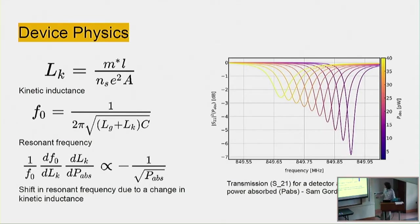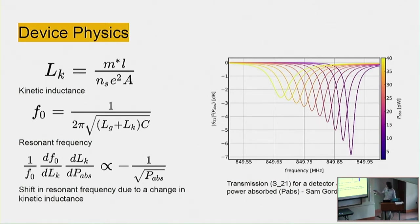All you have to do to read this out and measure the amount of power is place a tone at the resonant frequency. If power is absorbed in the detector and you are measuring the power of this tone at the end of the device, you will get a difference in the amount of power transmitted through the circuit if it shifts. So you just write a tone for every detector and observe the differences in tone powers or the phase of the microwave signal.